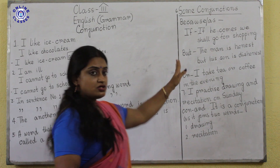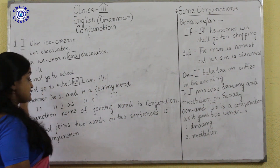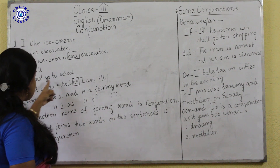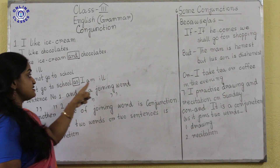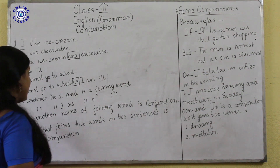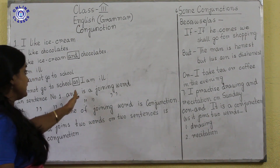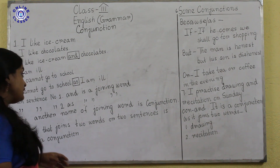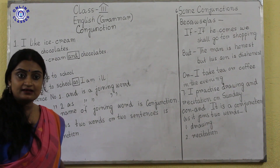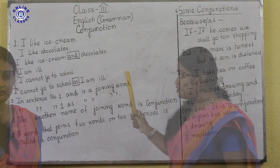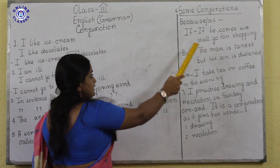We use 'because' or 'as' in cause-and-effect sentences, like I have used in sentence number two. I am ill. I cannot go to school. We can say: As I am ill, I cannot go to school. I can also use 'because' instead of 'as': I cannot go to school because I am ill.